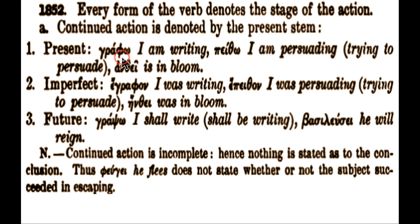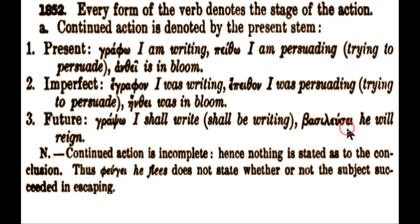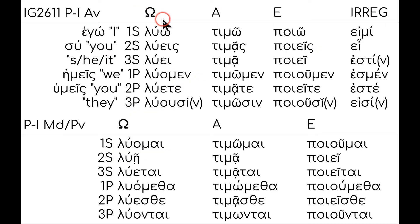You could also have the imperfect, which has separate endings and an epsilon augmentation, or a lengthening of the first vowel. For example, antheo 'is in bloom' goes to ēnthei for the imperfect; epathon from pathō. The future is a sigma added to the stem: graphō goes to grapsō, basileusō. So you have to know the present, the imperfect (with epsilon augmentation or vowel lengthening and separate endings), and the future (simply a sigma added to the present stem).